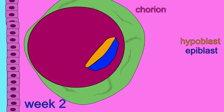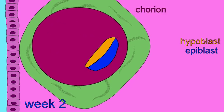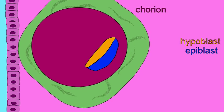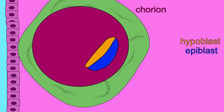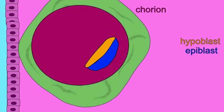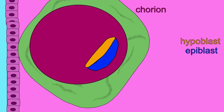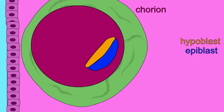The cells of the trophoblast become the extraembryonic membrane known as the chorion. These are embryonic cells, but they will not make a part of the embryo's body. They are an extraembryonic membrane.